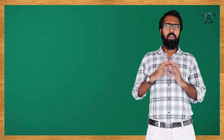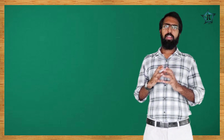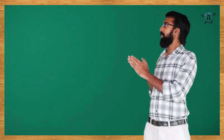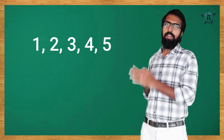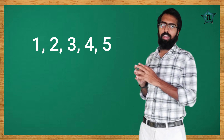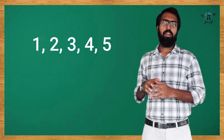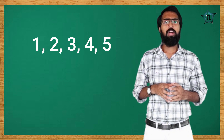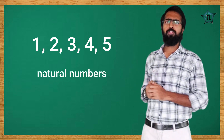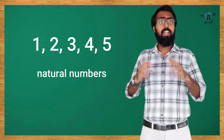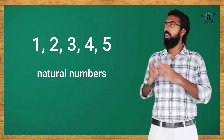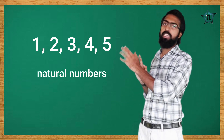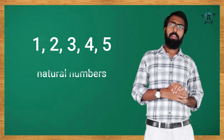A sequence is a collection of some numbers arranged in order. For example: 1, 2, 3, 4, 5 — these are natural numbers in order. That's the rule. If you have an order, it is called a sequence.